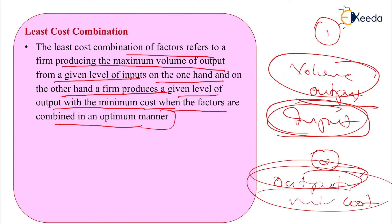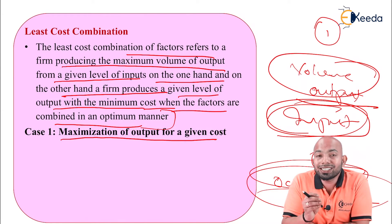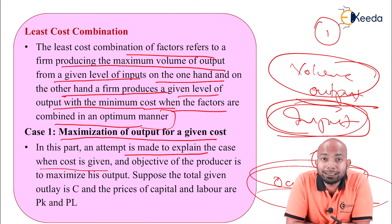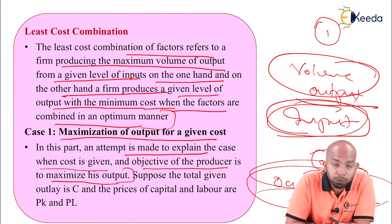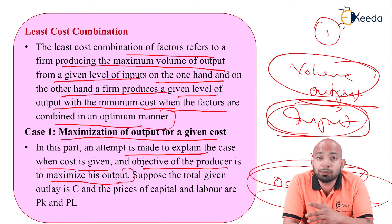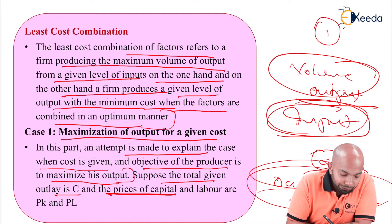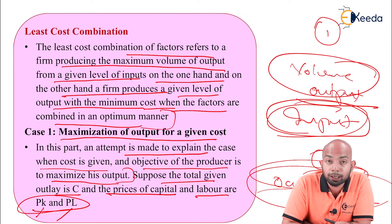Case 1 refers to maximization of output for a given cost. An attempt is made to explain the case when cost is already given and the objective of the producer is to maximize output. Suppose the total given cost is C, and the prices of capital and labor are Pk and Pl respectively.